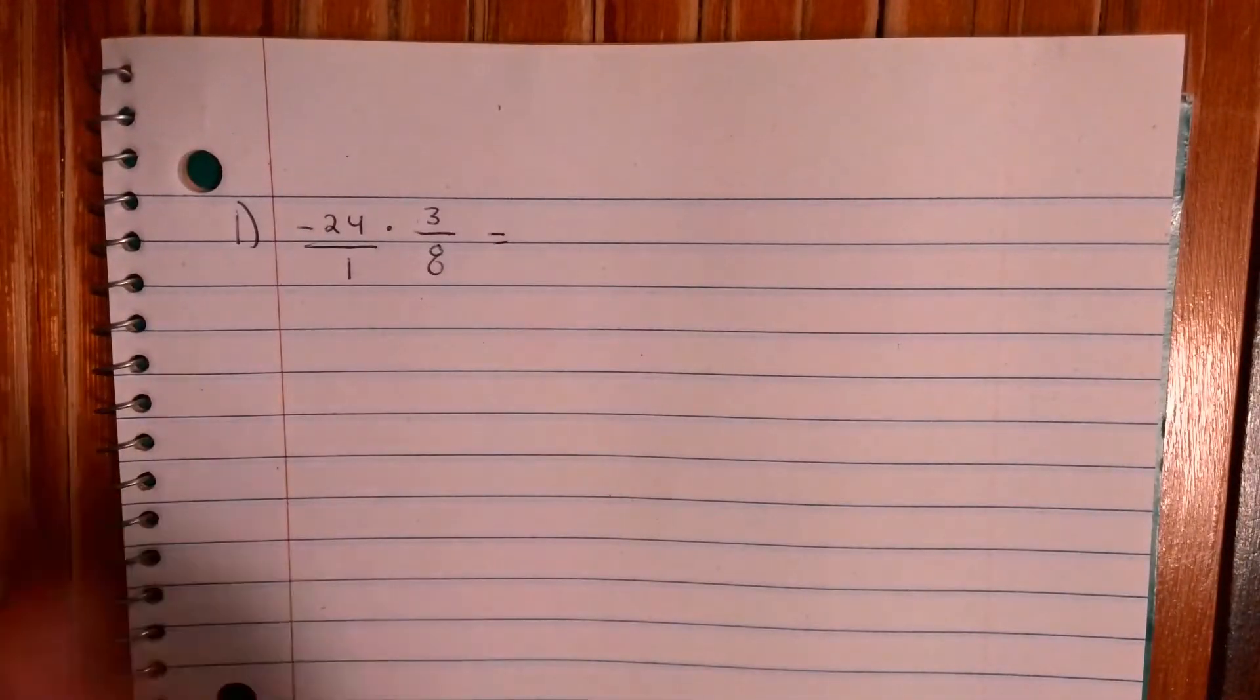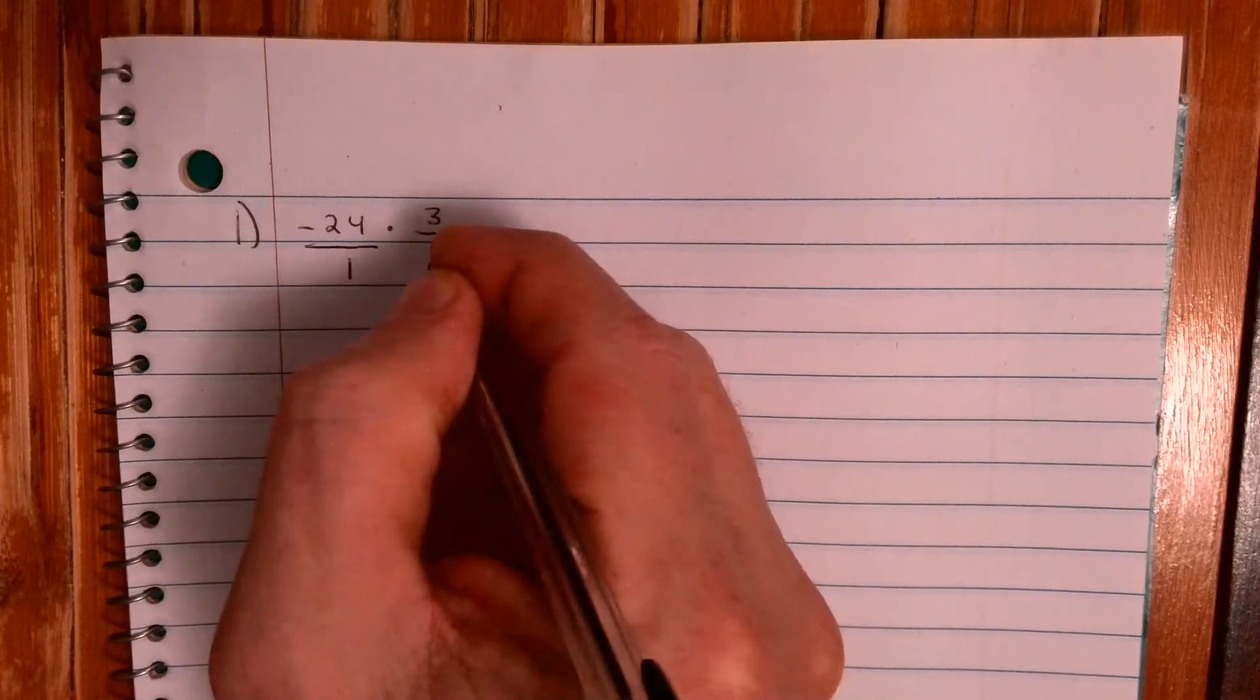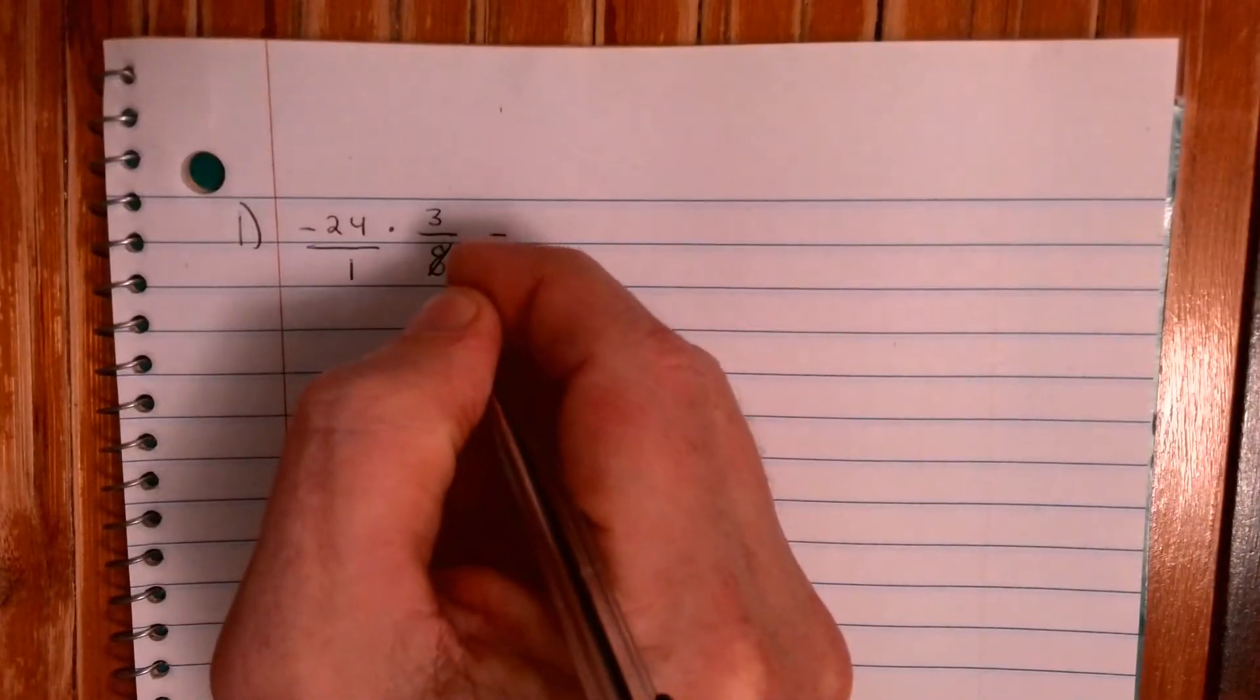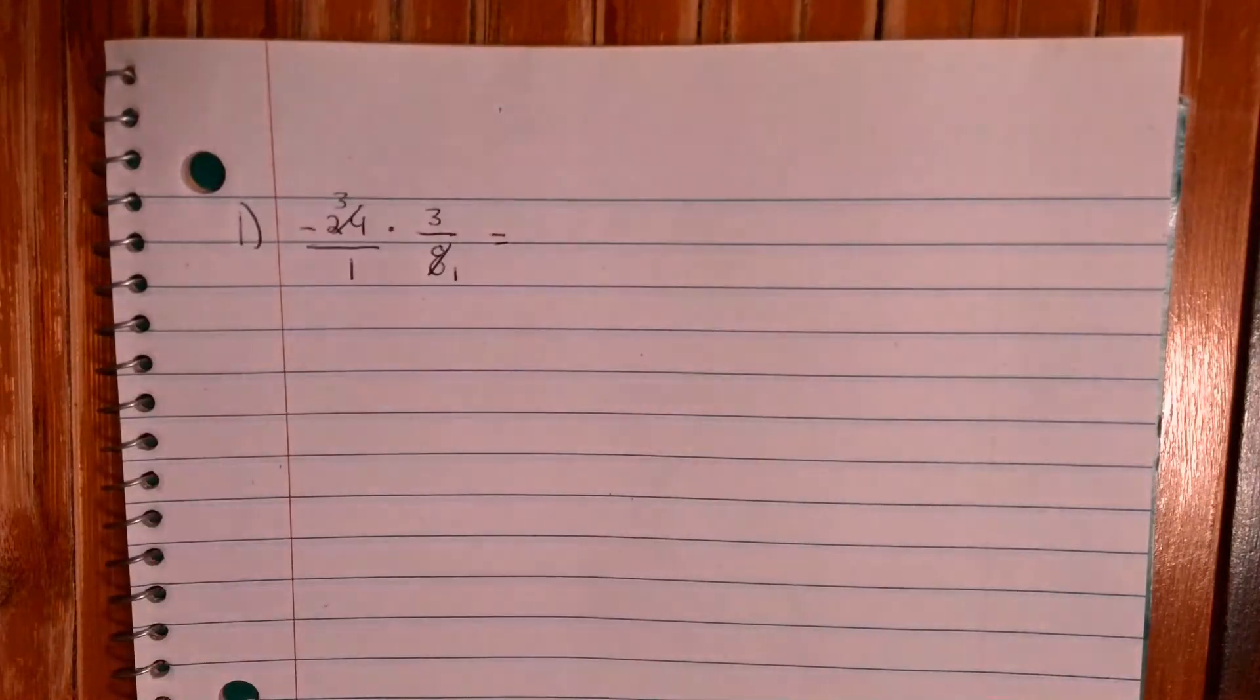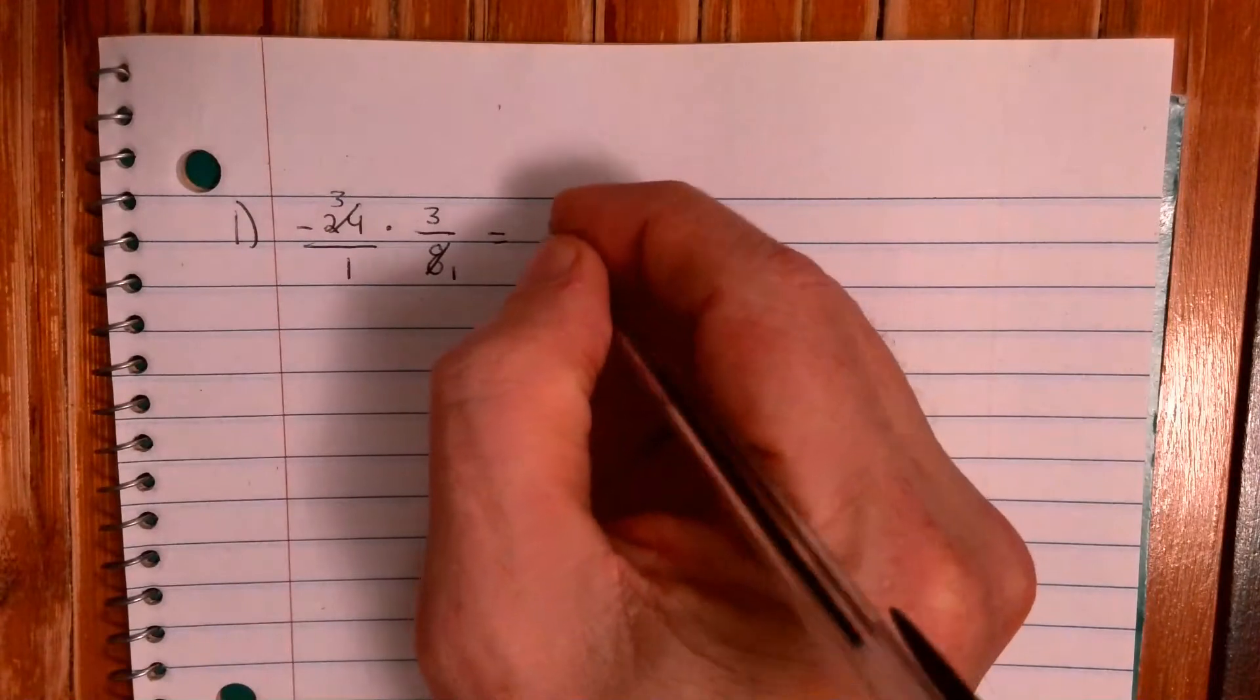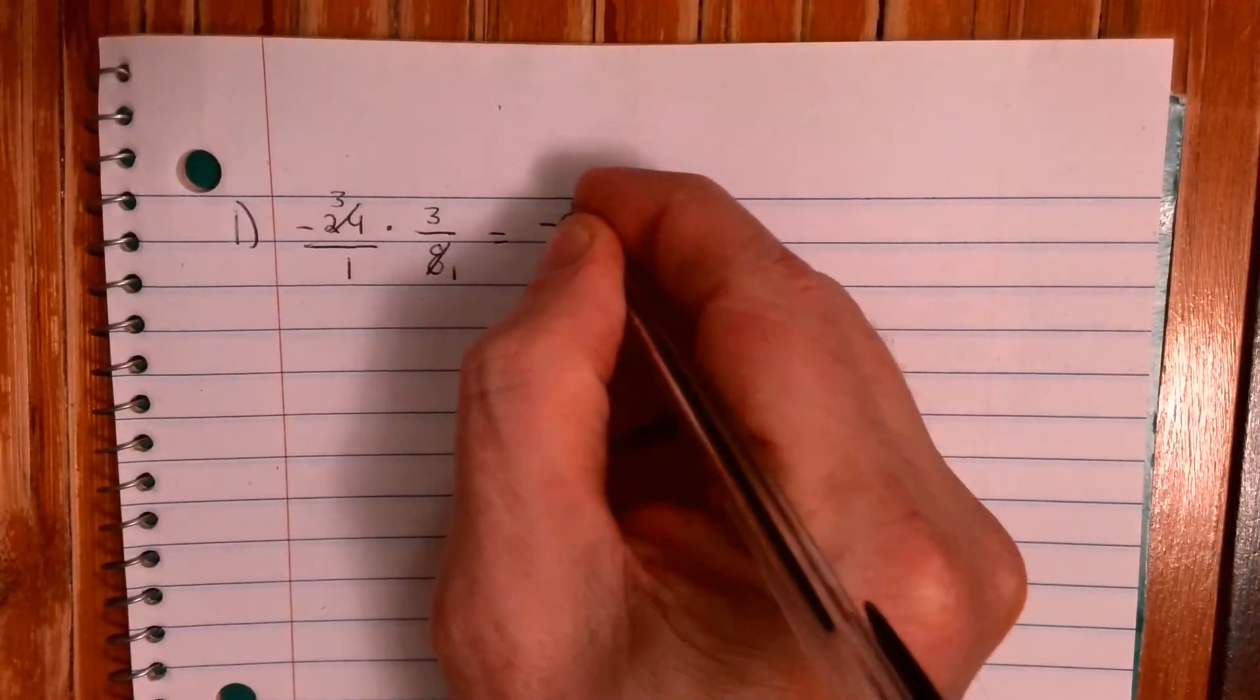So I know that 8 goes into 8 and 24. It goes into 8 once, it goes into 24 three times. So instead of dealing with negative 72 over 8, I deal with negative 9 over 1, which is just negative 9. Okay, so there's your first one, that was just multiplying a whole number by a fraction.